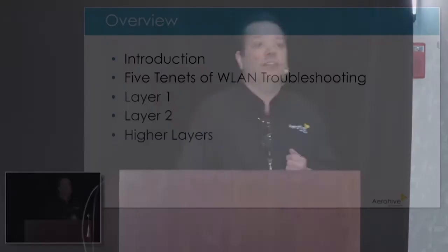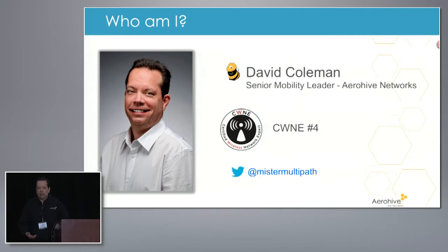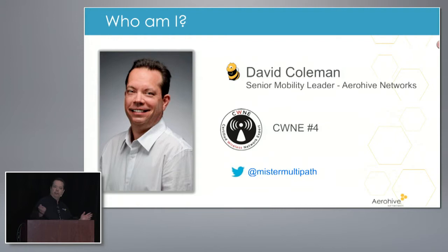We'll do a quick introduction of who I am, and then we'll get into what I call the five tenets of wireless LAN troubleshooting, and look at it from different perspectives going up the OSI model. I'm David Coleman, the senior mobility leader for AeroHive Networks — just a goofy title my boss and I came up with. I work with the knowledge services department at AeroHive, trying to figure out how Wi-Fi works, how our solution works, and sharing that knowledge with customers, partners, and internally.